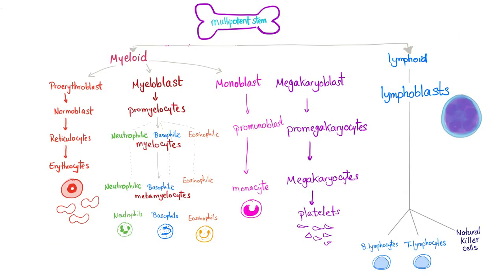And back to our famous slide. Chronic myeloid leukemia is supposed to be here, but now it's going back to the blasts, to the immature cells. This is called blast crisis, or transformation.